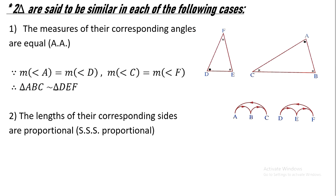Now we have a special case. Two triangles are said to be similar in each of the following two cases. Case one: the measures of their corresponding angles are equal. We only need two angles to prove two triangles are similar — if we prove two angles in the first triangle are congruent to the two corresponding angles in the second triangle. This is because any triangle has three angles and the sum of interior angles equals 180 degrees.